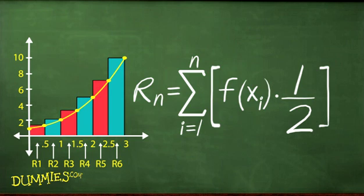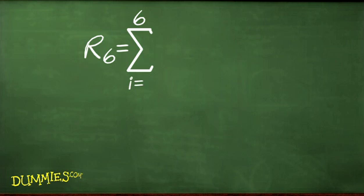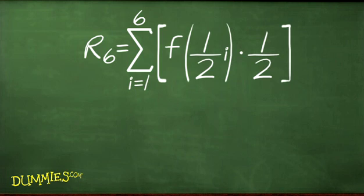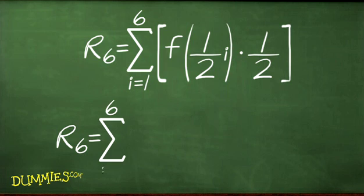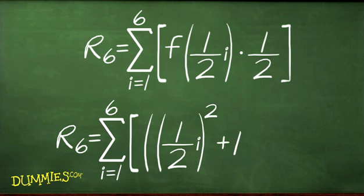So now you can replace the xi in the formula with 1 half i, giving you this. This function, f of x, is x squared plus 1. So f of 1 half i equals 1 half i squared plus 1. Now you can substitute 1 half i squared plus 1 for f of 1 half i.